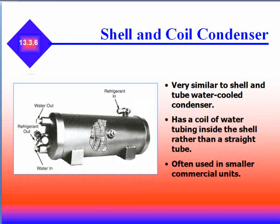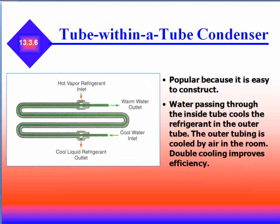The shell and coil is very similar to the shell and tube. The water-cooled condenser has a coil of water tubing inside the shell rather than straight tubes, and is often used in smaller commercial units. It's popular because it's easy to construct. Water passes through the inside of the tubes, cooling the refrigerant in the outer tube, and the outer tube is also cooled by air in the room, providing double cooling and improved efficiency.